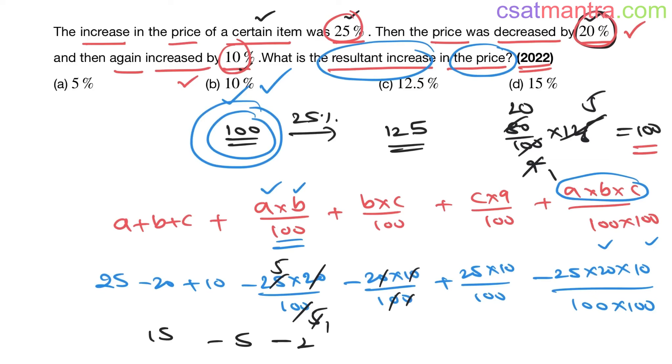Minus 25 into 20 into 10 by 10000 is minus 0.5. So we have: 15 minus 5 minus 2 plus 2.5 minus 0.5. Minus 2.5 and plus 2.5 cancel. 15 minus 5 is 10.